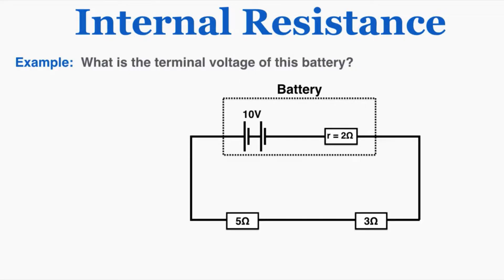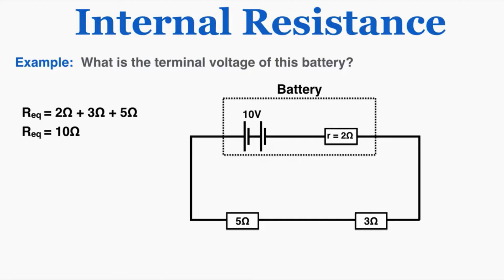Here's an example problem with internal resistance. What is the terminal voltage of this battery? We can see that this battery contains a voltage of 10, and the internal resistance is 2 ohms, and it also has a 5 and 3 ohm resistor outside of the battery. The equivalent resistance in the circuit is going to be equal to 10 ohms, because the internal resistance behaves like any other resistor in the circuit — it just happens to be inside the battery, so it's also in series with those two other resistors, and those add together to make 10 ohms.